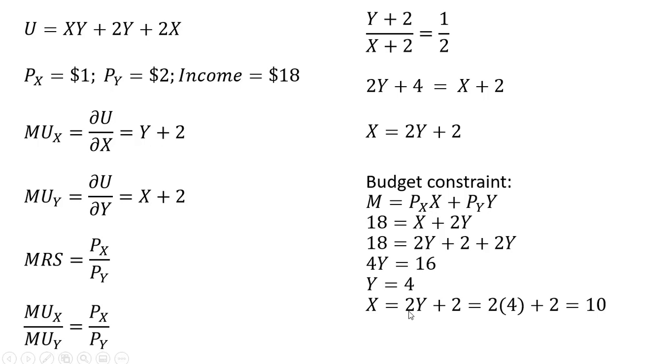And to get back how many units of good X this consumer should buy, we're going to plug this Y equals 4 into this condition up top. Doing that, the consumer will buy 10 units of good X.